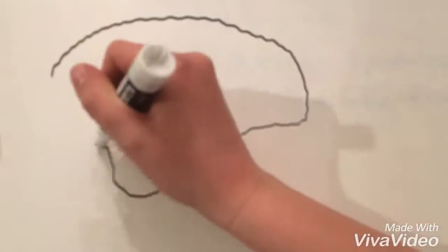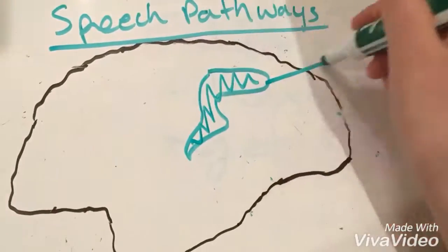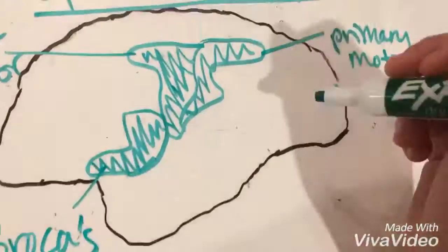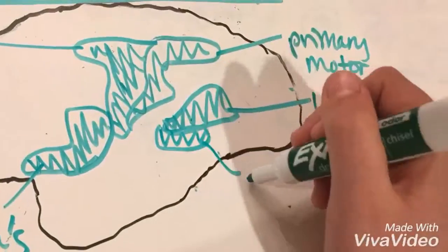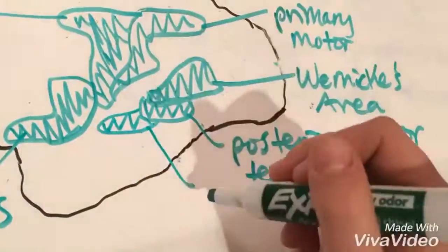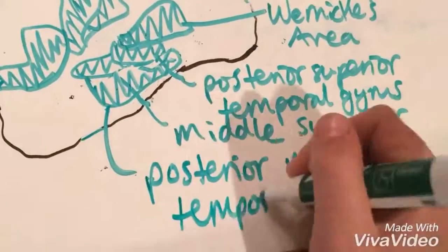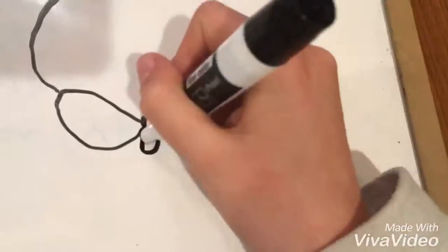Let's look at the speech pathways of the brain. These include the primary motor, the premotor, Broca's area, Wernicke's area, the posterior superior temporal gyrus, the middle superior temporal gyrus, and the posterior middle temporal gyrus.